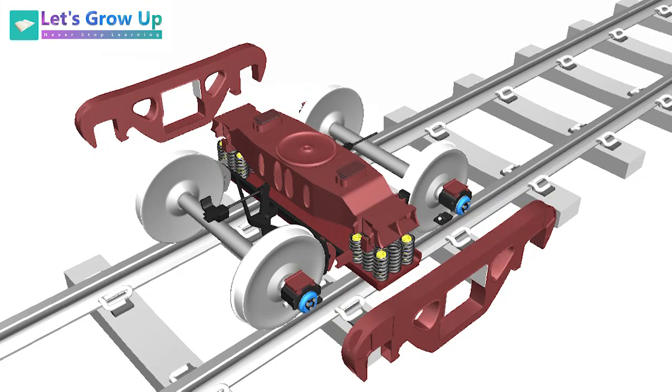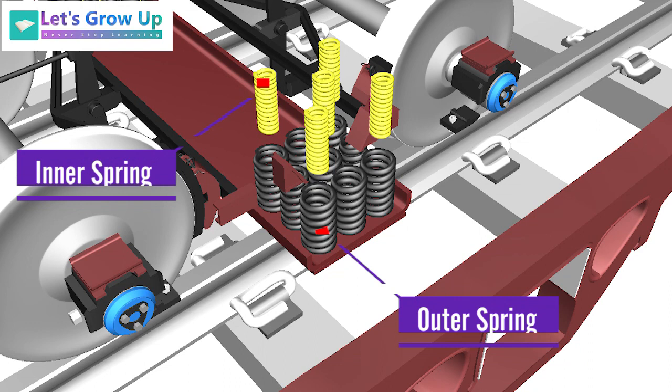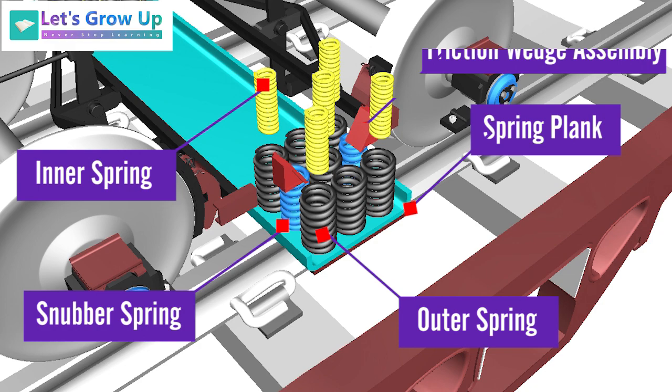The secondary suspension consists of side frame, bolster beam, outer spring, inner spring, snubber spring, spring plank, and friction wedge assembly.